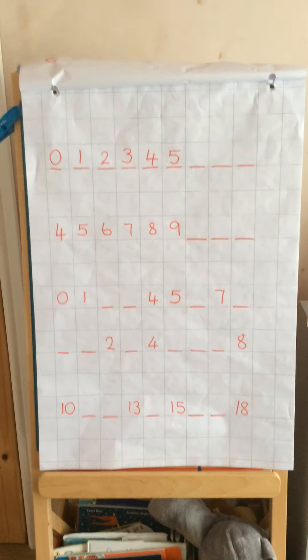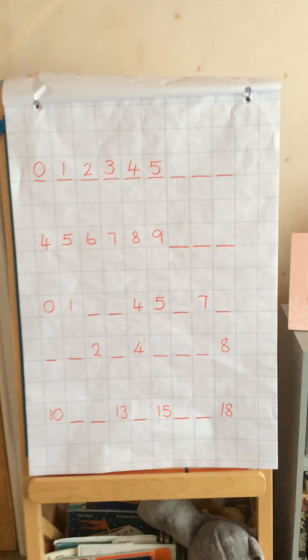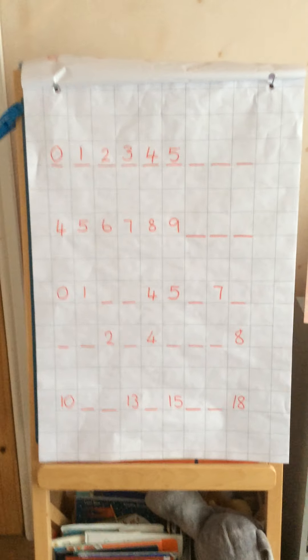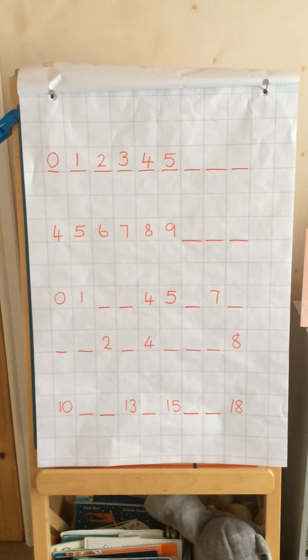Once you've completed all of these, get your adult to help you take a photo of your work and send it into Dojo. Then it's your challenge to make me a number pattern - what number pattern are you going to do? Send it to me and I will have a go and see if I can crack your pattern. I love a challenge, Reception - come on, make them difficult for me! Complete these first, then the challenge. Look forward to you testing my brain - let's see what you can do!